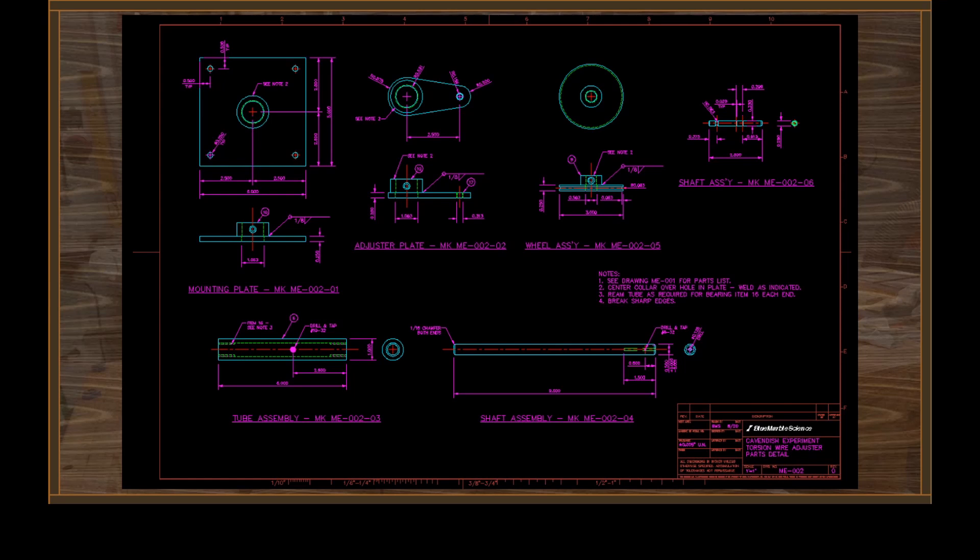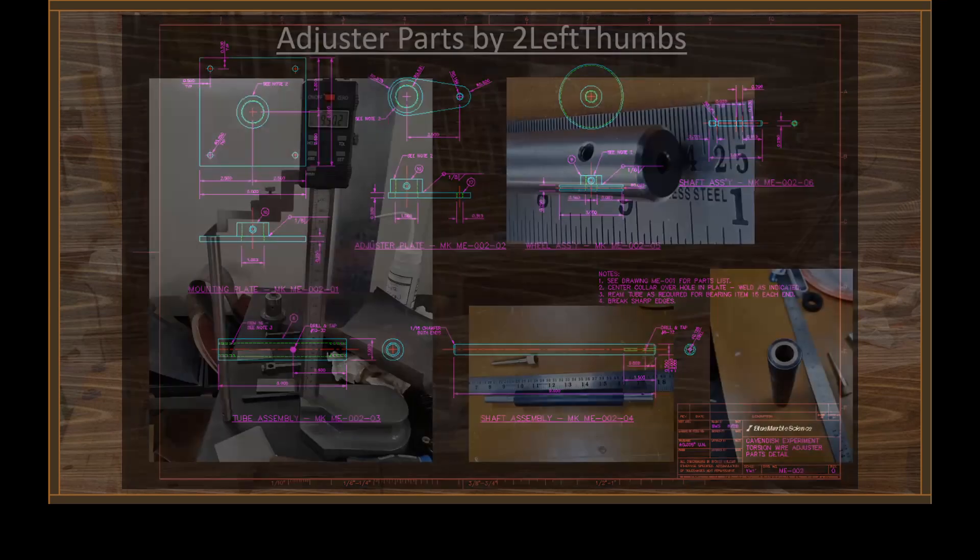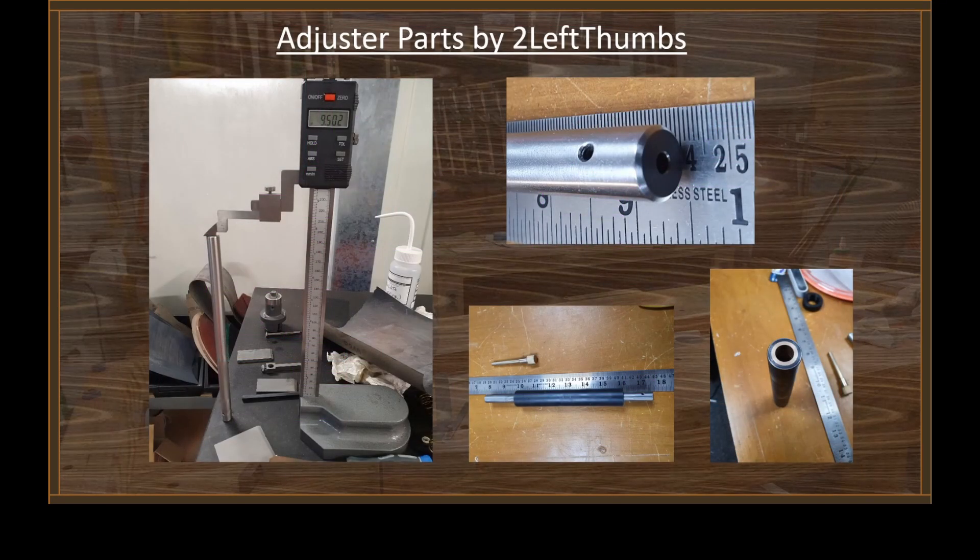Now one of the channel members contacted me some time back and offered his assistance, and it turns out he is an excellent machinist. He prefers to go by the name Two Left Thumbs, which is a curious name for a machinist, but we'll just call him Lefty. My good friend Lefty has been busy working on the parts and pieces for this thing. Here are photographs of some of the stuff he's been doing in the last couple of days. I owe a huge thanks to Two Left Thumbs for his assistance and consultation in refining this design.